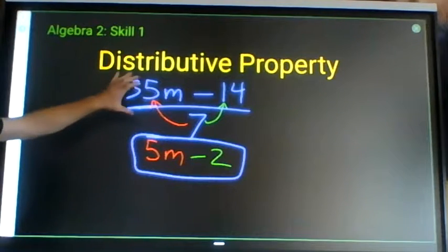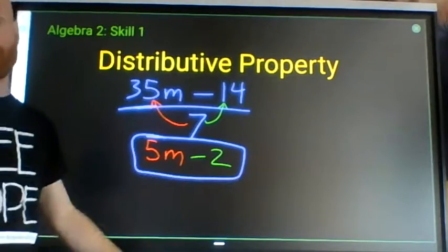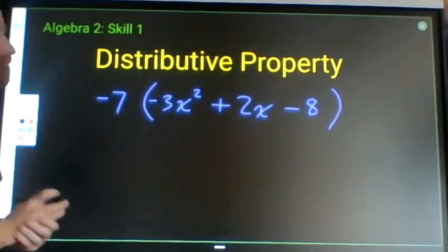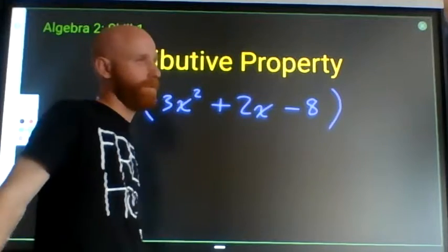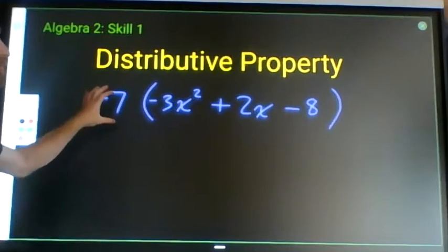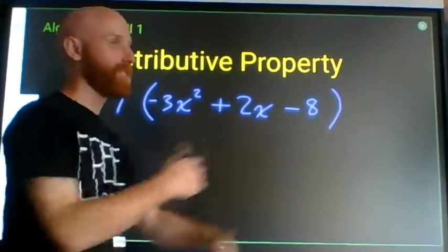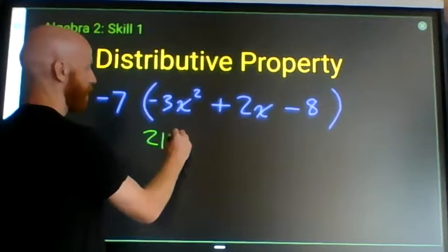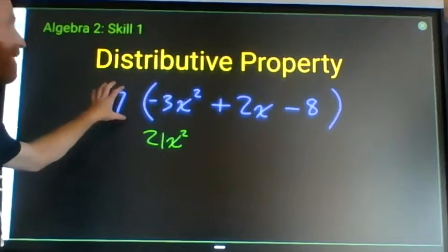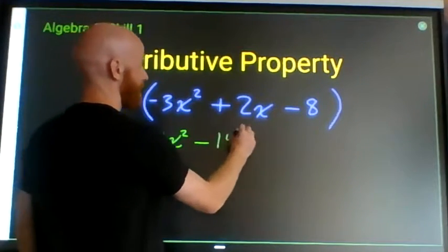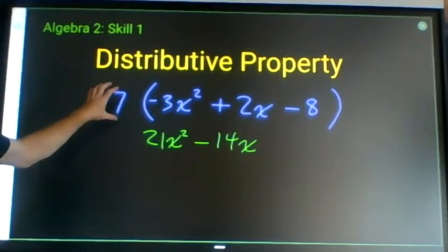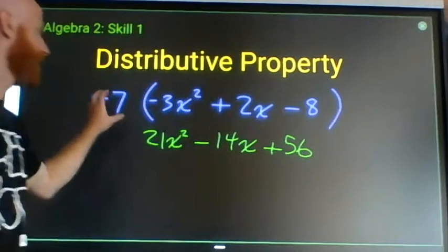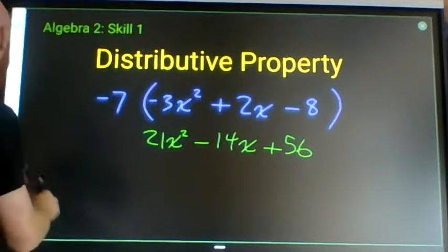That simplified expression is equivalent to the original. Something to be particularly mindful of: if I am distributing a negative value through parentheses, multiplying by a negative switches signs. So negative 7 times negative 3 gives positive 21x squared; negative 7 times plus 2 gives minus 14x; and negative 7 times minus 8 gives plus 56.